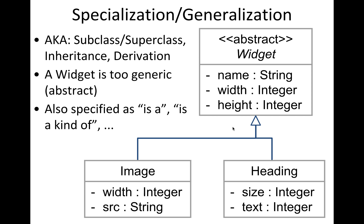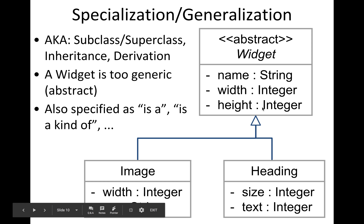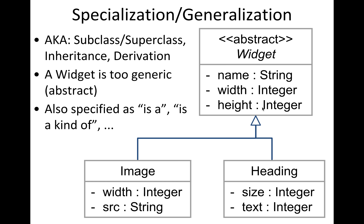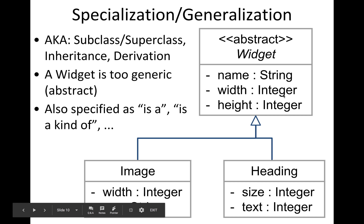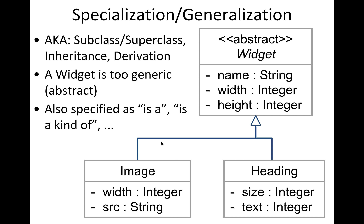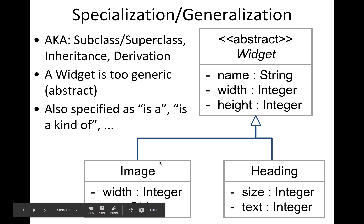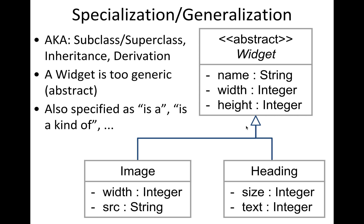We often talk about the relationship between these as saying that a heading 'is a' widget, or an image 'is a' widget — an is-a relationship. This specialized subclass is a kind of the above one. The way we document it is with a triangle pointing to the superclass — the more general class.